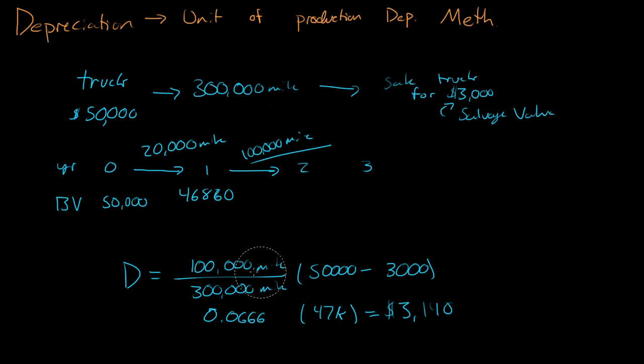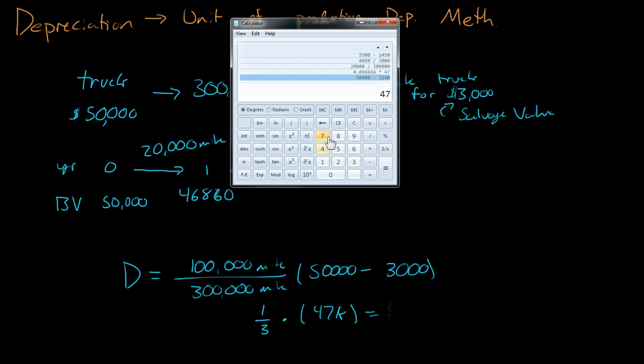100,000 divided by 300,000 is just one-third. So it's the 47,000 times one-third. So that is equal to $15,660.